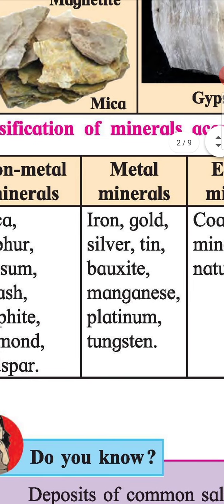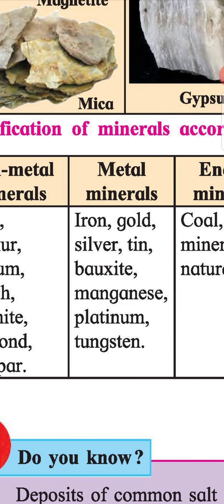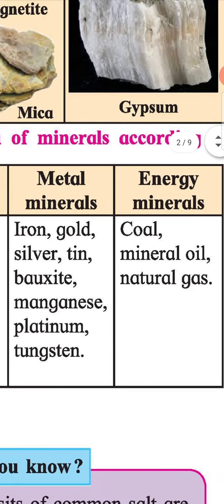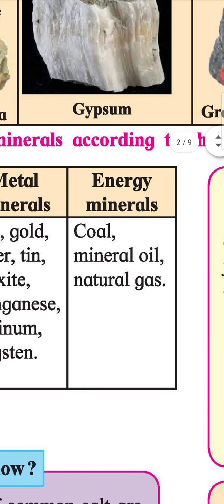Under metal minerals we have iron, gold, silver, tin, bauxite, manganese, platinum, and tungsten. Under energy minerals we have coal, mineral oil, and natural gas.